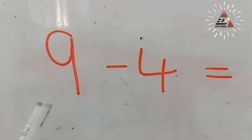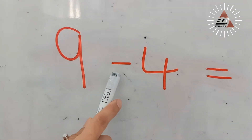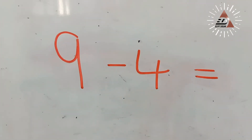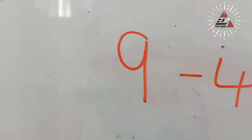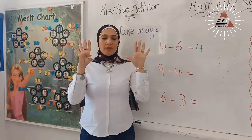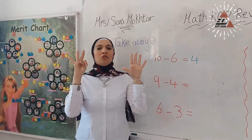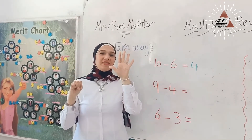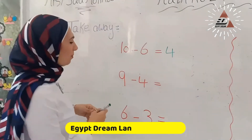Another one. What is this number? 9 minus. What is this number? 4. Which one is the bigger number? 9. Now, put 9 on your hand and take away 4: 1, 2, 3, 4. How many fingers are left? Yes, 5. Write number 5.